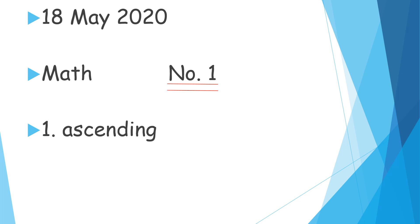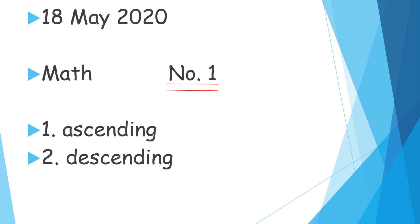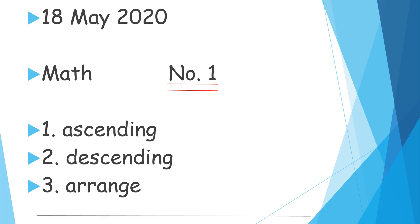A-S-C-E-N-D-I-N-G. Ascending. Then leave a space down for the second word. The second word is descending: D-E-S-C-E-N-D-I-N-G. Descending. Then leave a space again down for the third word. The third word is arranged: A-R-R-A-N-G-E. Arranged. Then leave a space down to draw a line.